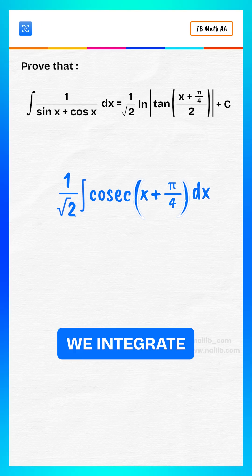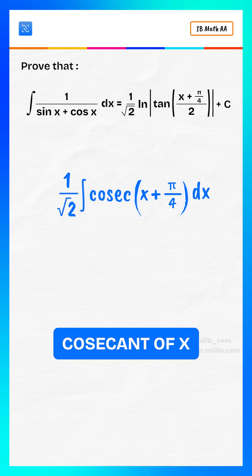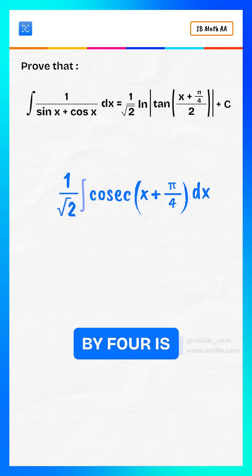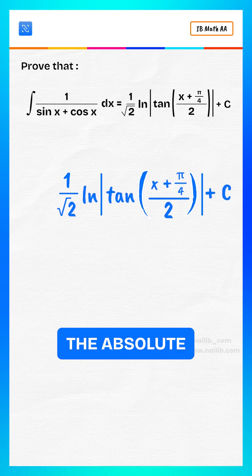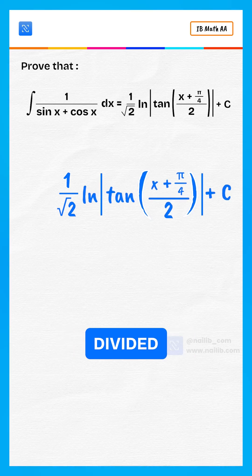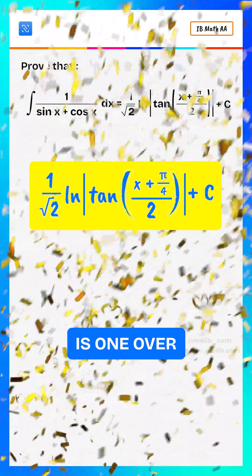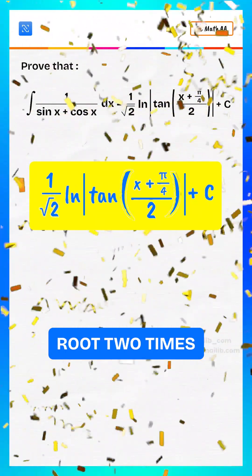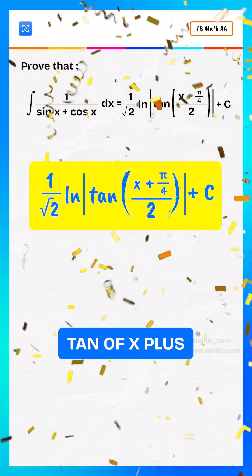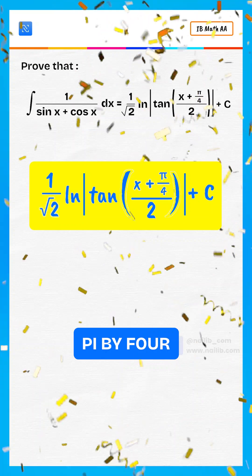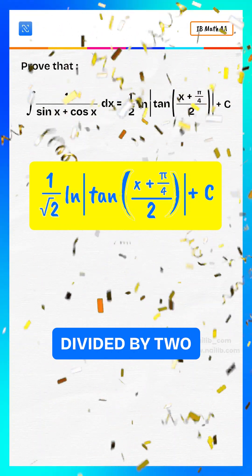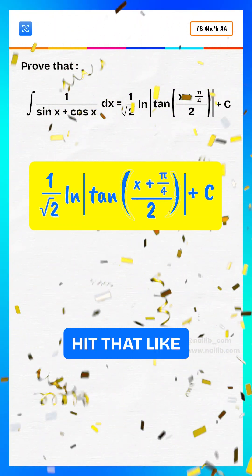Now we integrate. The integral of cosecant of x plus pi over 4 is log of the absolute value of tan of x plus pi over 4 divided by 2. So the final answer is 1 over root 2 times log of the absolute value of tan of x plus pi over 4 divided by 2, plus C.